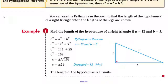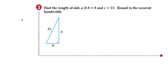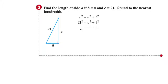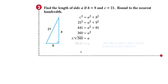Example number two: find the length of side A if we know that B is 9 and C is equal to 21, rounded to the nearest hundredths place. Write down the formula: C squared equals A squared plus B squared. Substitute the values we know — C is 21 and B is 9 — so this becomes 21 squared equals A squared plus 9 squared. Simplify: 441 equals A squared plus 81. Solve for A squared by subtracting 81 from both sides to get 360. Then take the square root: plus or minus the square root of 360, approximately 18.97.